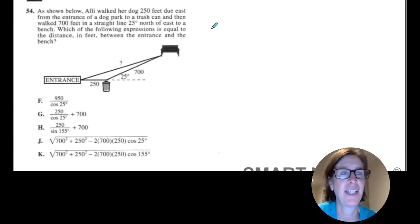So here it says, as shown below, Ollie walked her dog 250 feet due east from the entrance of a dog park to a trash can, and then walked 700 feet in a straight line 25 degrees north of east to a bench. Which of the following expressions is equal to the distance in feet between the entrance and the bench?